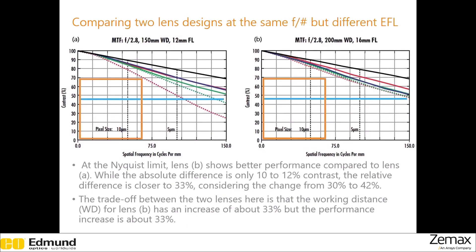Now let's look at two designs where the F-number is the same but they have different effective focal lengths. This orange box shows the intercept at 70% contrast of the first lens. Looking at the light blue lines in both cases, we can see that lens B produces much better contrast — to be precise, the lens can produce 33% better contrast relative to the first lens.